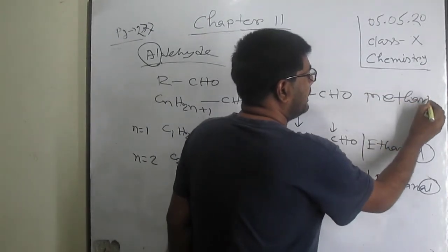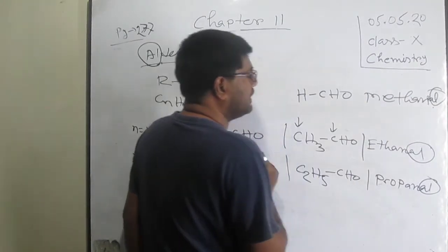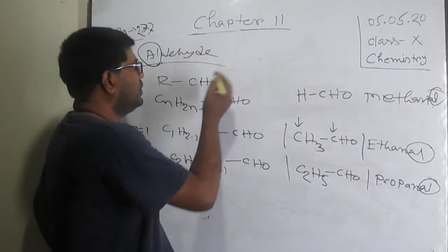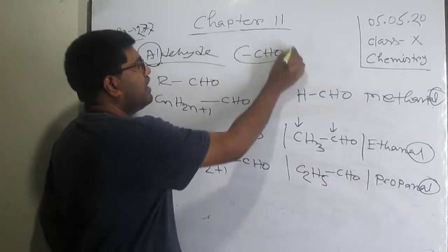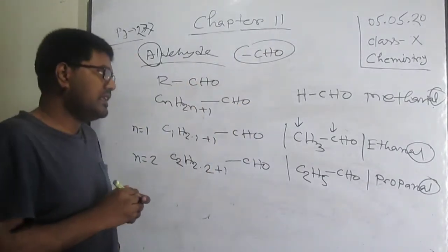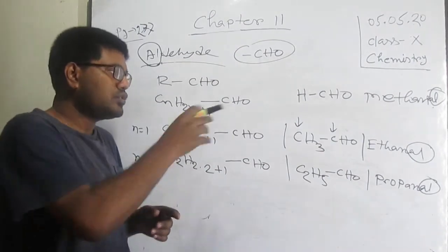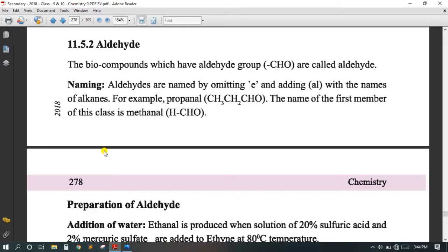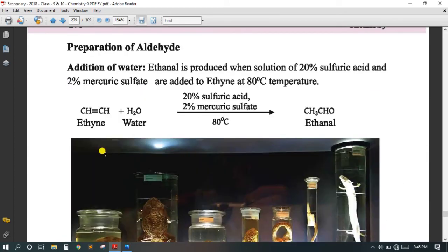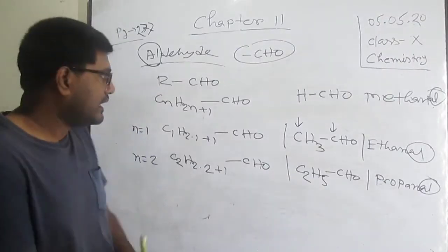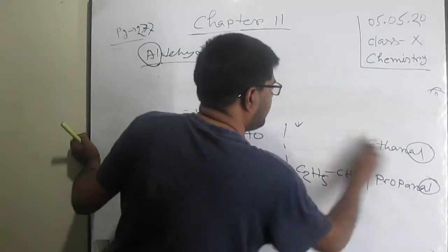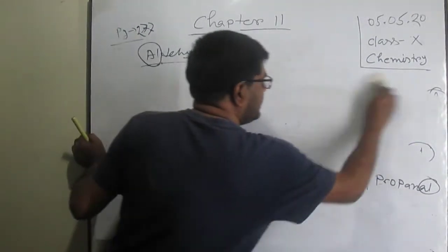CHO is the functional group of aldehyde. The last two letters of an aldehyde name are '-al'. Now we need to learn its preparation. In my previous lecture I wrote this relation: preparation of aldehyde by hydrolysis of alkyne.